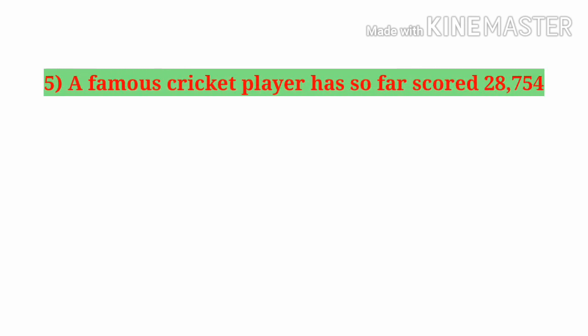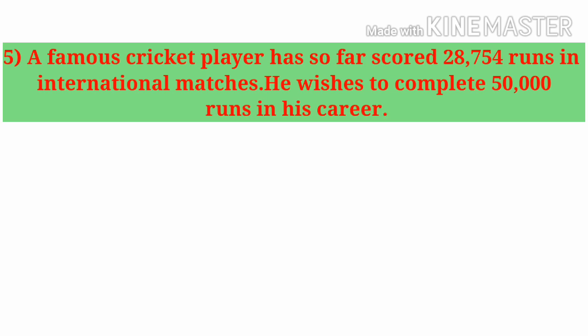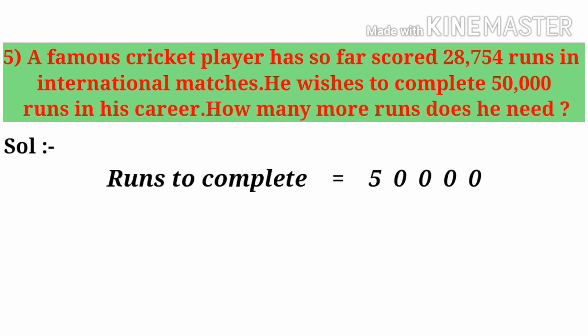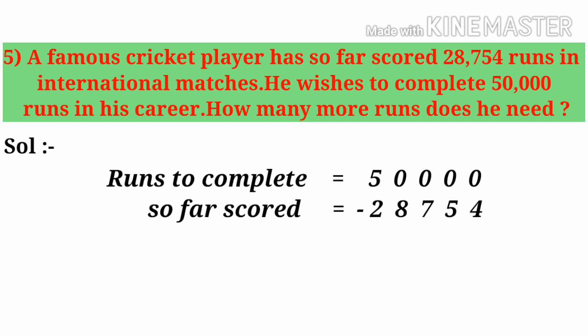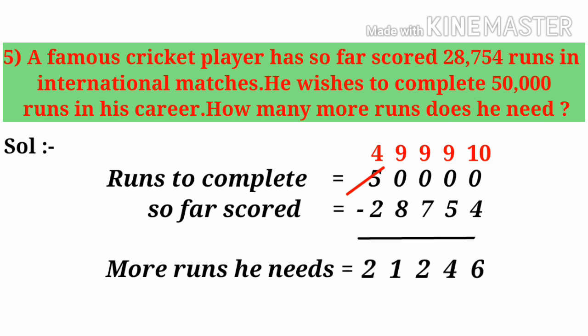Now let us do the fifth problem. A famous cricket player has so far scored 28,754 runs in international matches. He wishes to complete 50,000 runs in his career. How many more runs does he need? Observe the word 'more' in the problem, so let us do subtraction. Runs to complete: 50,000. Runs scored so far: 28,754. By subtraction, the runs he needs is 21,246.